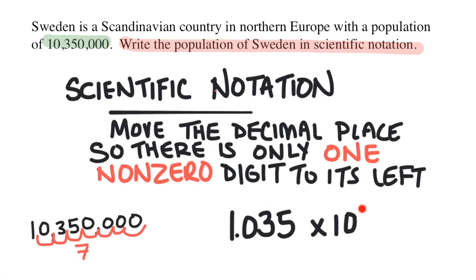times 10, which is raised to the exponent that equals the number of times that I moved the decimal. I moved it seven times, so I write seven. So this is the population of Sweden in scientific notation.